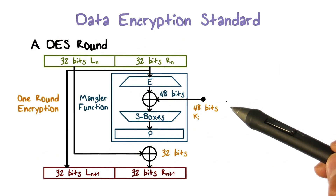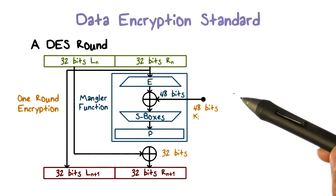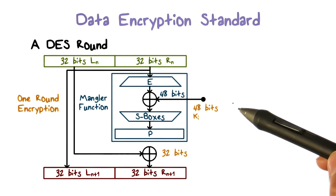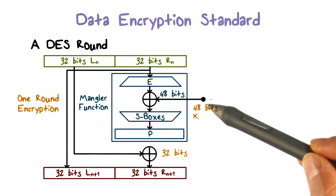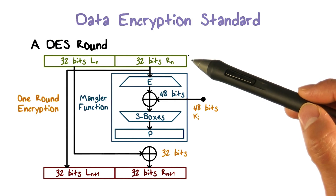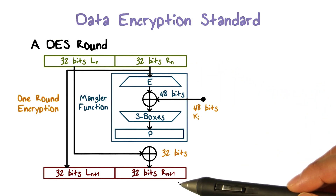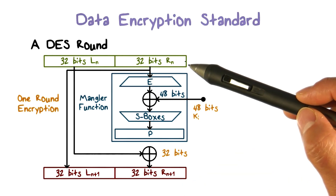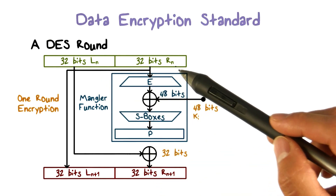Recall that DES has 16 rounds of operations. Each DES round has the same operations and uses a different per-round key. Each DES round takes as input the ciphertext produced by the previous round and outputs ciphertext for the next round. The input is divided into the left half and the right half.